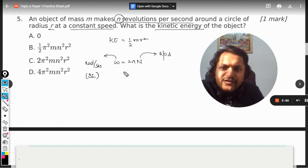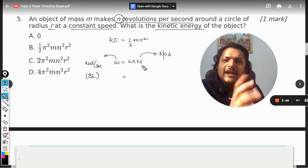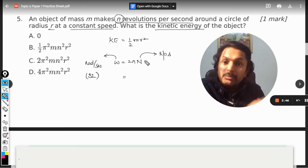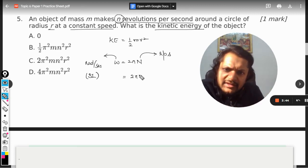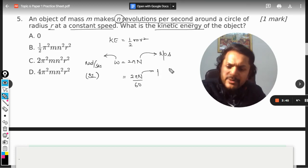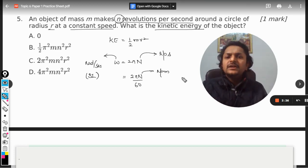If n is given as rpm, many a times it would be per minute, so we have to divide this equation by 60. Like if n is given as rpm, revolutions per minute, then we have to divide it by 60 and we will get the value for the omega.